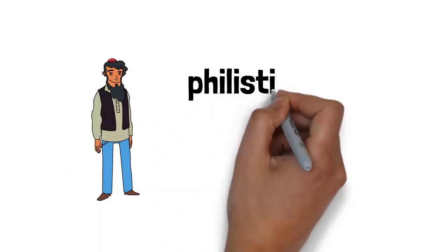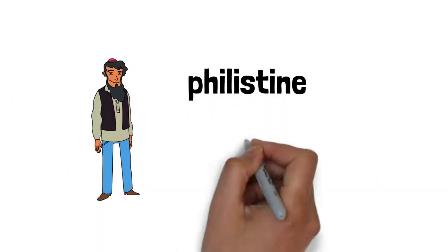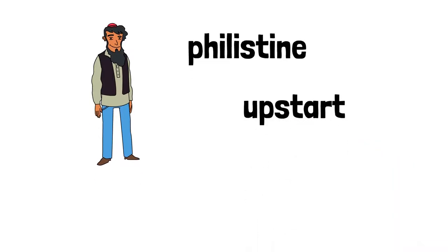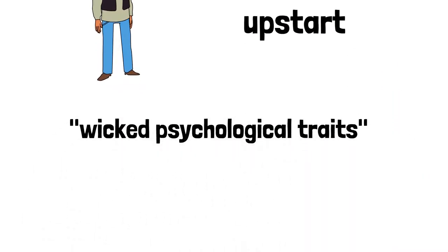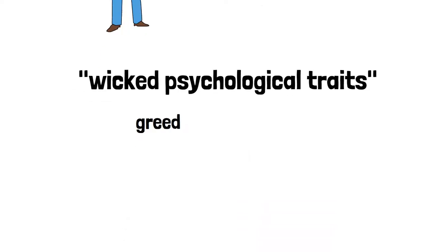Each class in society was given certain stereotypes. The Jews were given the stereotype as being the upstarts and the philistines of society. They were perceived as having wicked psychological traits like greed, insolence, and servility.